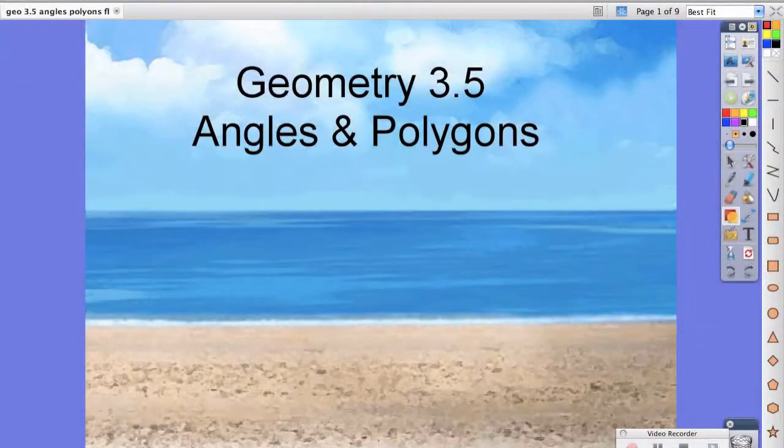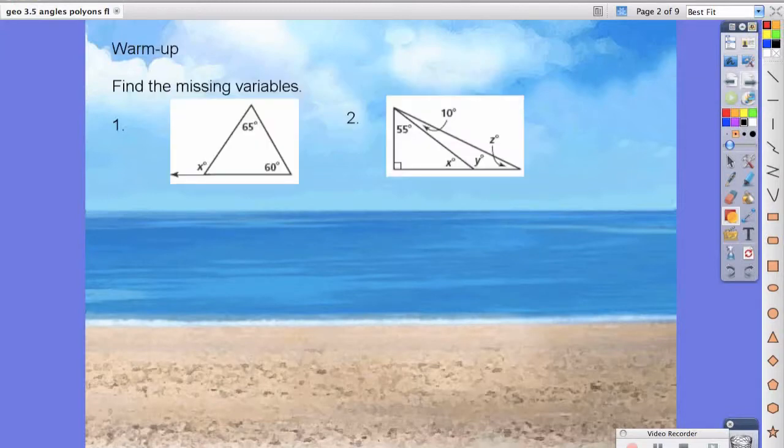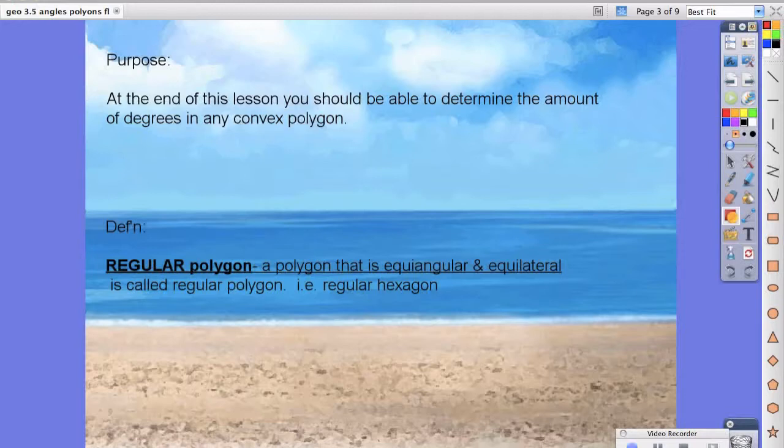Hello students. Today we're going to talk about angles and polygons. In your book this is chapter 3, section 5. At the end of this lesson, you should be able to determine the amount of degrees in any convex regular polygon.